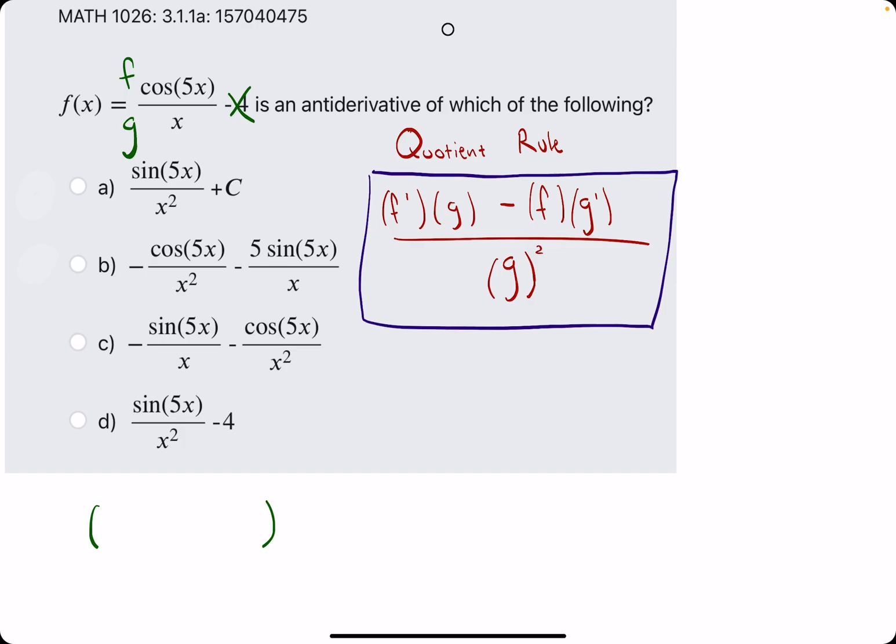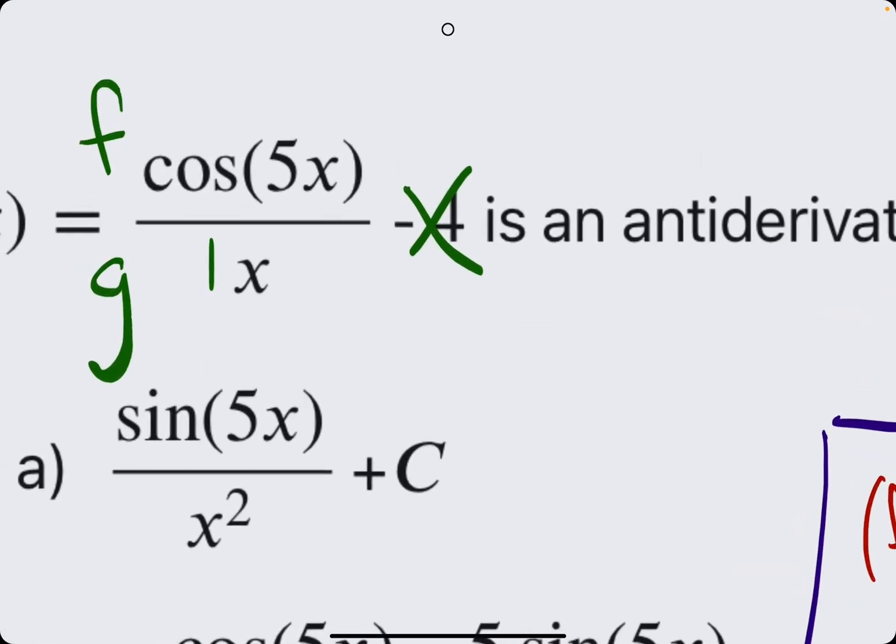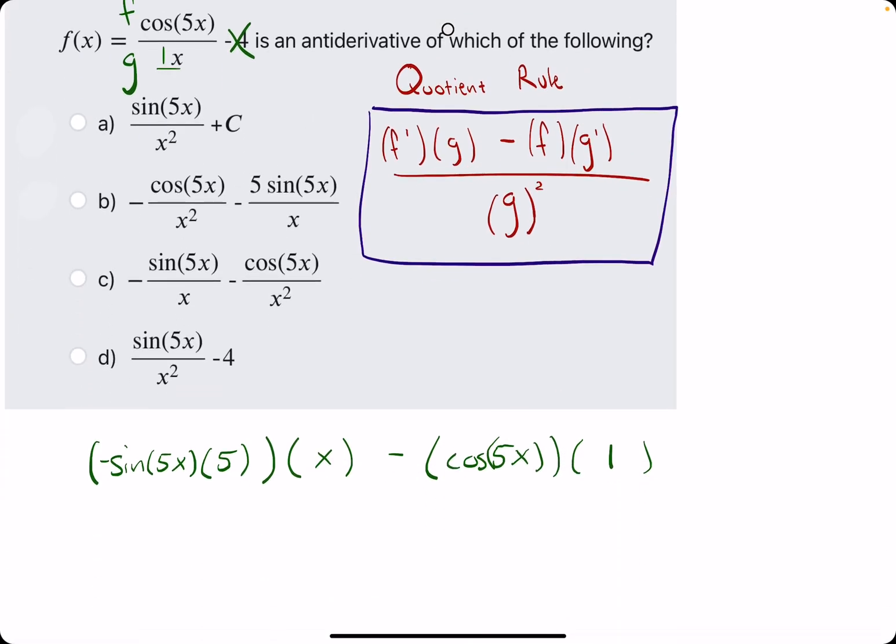starting with f prime. f prime will be the derivative of the numerator. Derivative of cosine is negative sine of 5x. Then, we multiply by the derivative of the inside, 5x, which is just 5. That's f prime. g is x. We put the minus. We put the original f, cosine of 5x. And then, we put g prime. If g is x, the derivative of 1x is 1. The derivative of any constant times x is just that constant. Just 1 in this case.